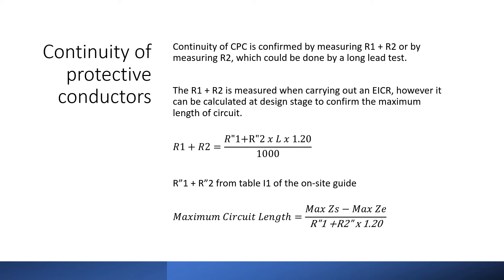When carrying out an initial design the R1 plus R2 is calculated by multiplying the length of the circuit by tabulated values for R1 plus R2 per metre and a multiplier of 1.2 to allow for the difference in operating temperature.